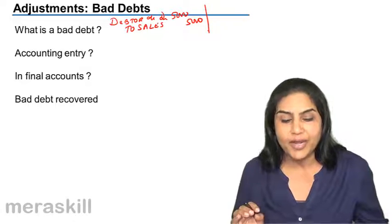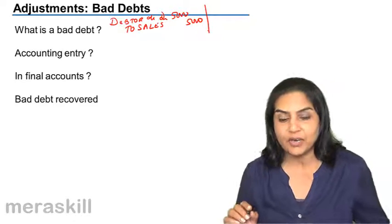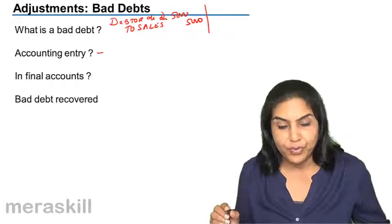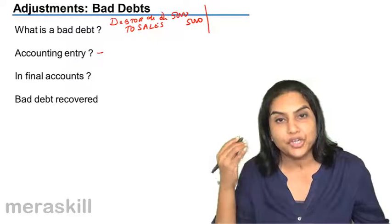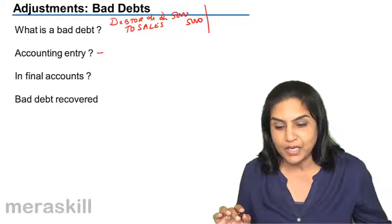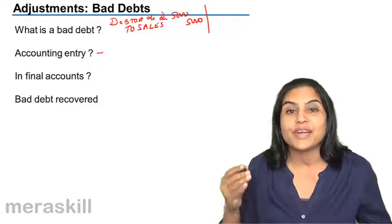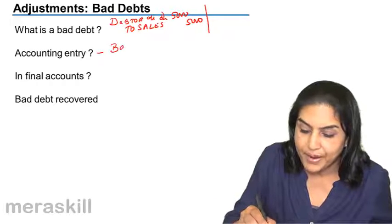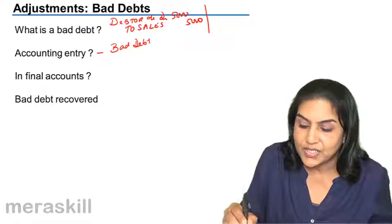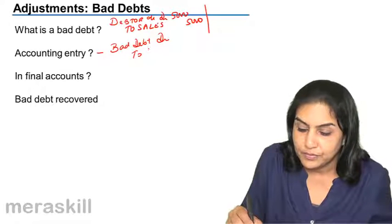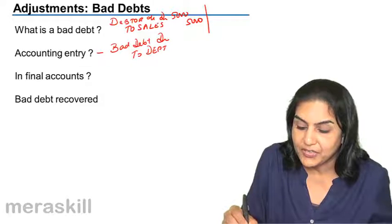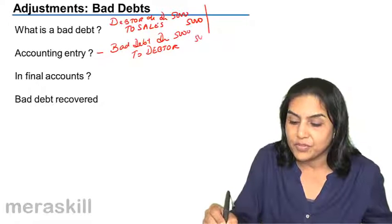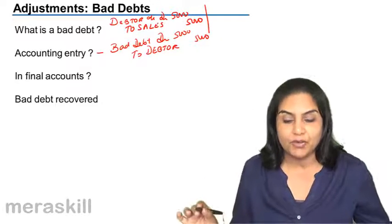What is the accounting entry for this? If this debtor represents Mr. X's account, there is no need to retain X's account when we are sure that X is not going to pay. So we cancel X's account — we credit the debtor account, that is Mr. X's account. What do we debit instead? We debit bad debt account. So this is our loss now — we transfer what we thought was an asset to a loss account of 5,000. Mr. X's account is credited and bad debt account is debited.